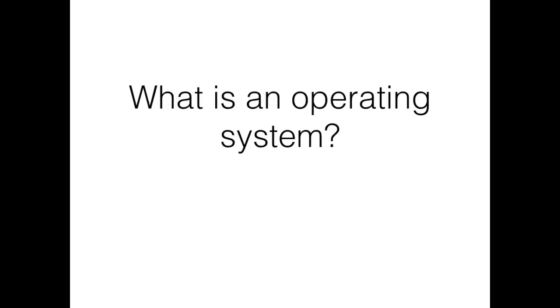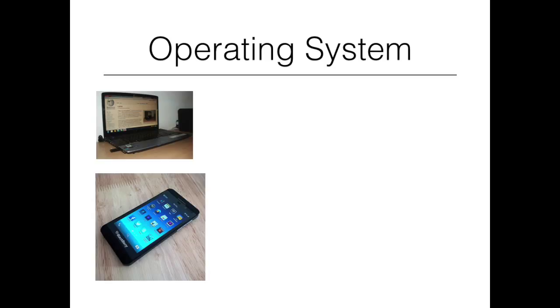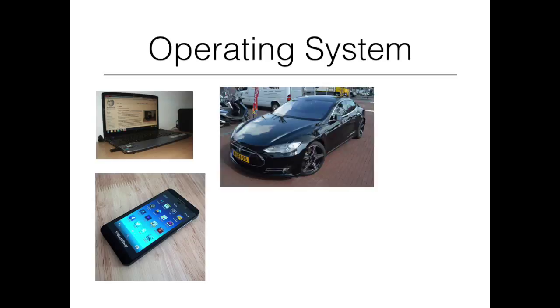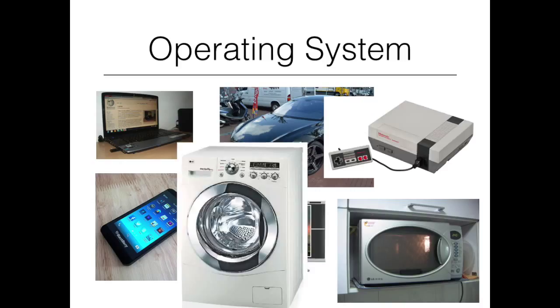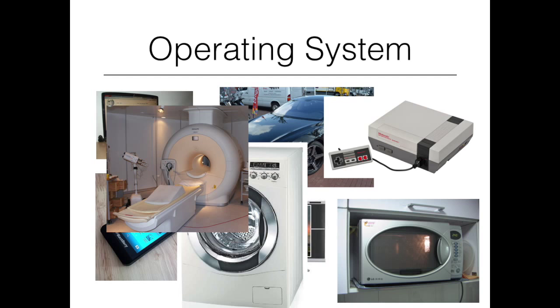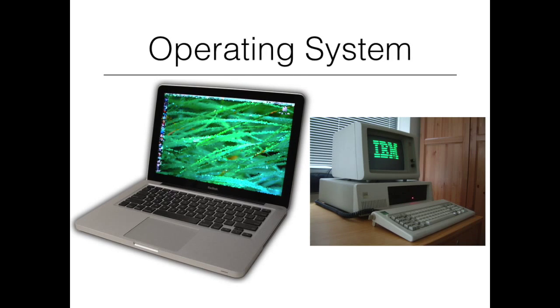The question of what is an operating system doesn't really have a single useful answer — too many different kinds of software fall under that label. Your computer and your phone each have an operating system, but so does your car, your television, and even your microwave. Anything you use that includes a computer also includes an operating system. So let's simplify a bit and only consider the operating systems that would run on your laptop or desktop computer.